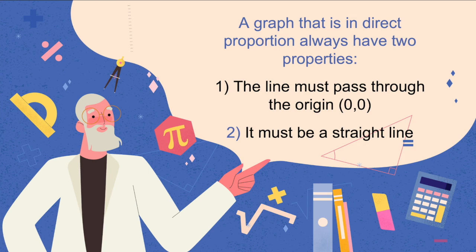To recap: a graph that is in direct proportion must have two properties — it must be a straight line, and it must pass through the origin, the point (0, 0).